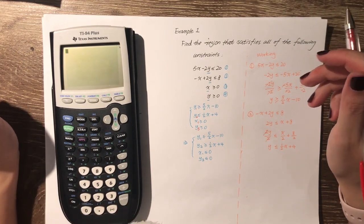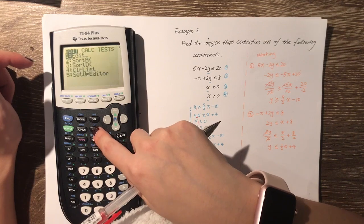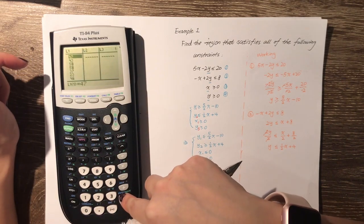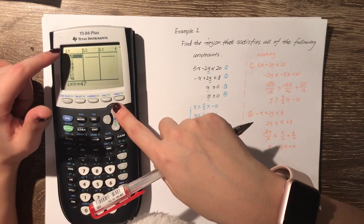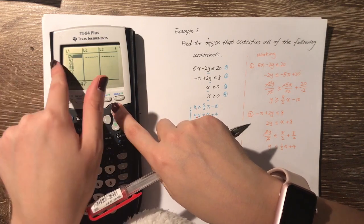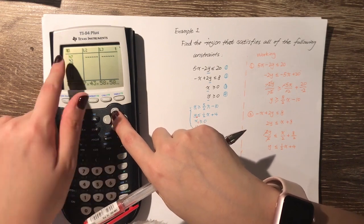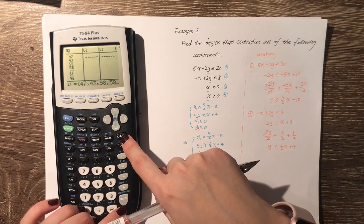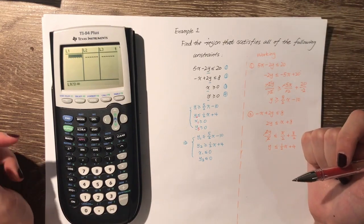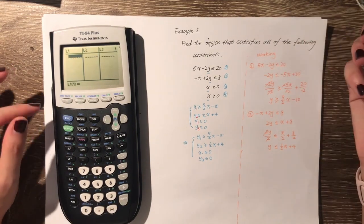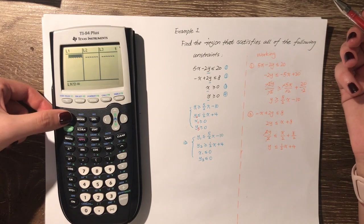First, click STAT and then ENTER. We need to check if there are any existing lists. If there are, we need to clear every list. Go up and highlight List 1, then press CLEAR and ENTER. Now everything is cleared.